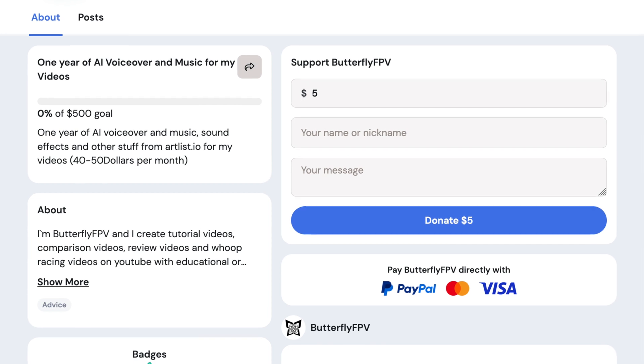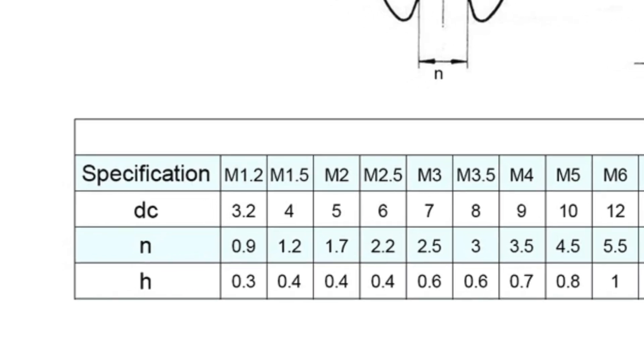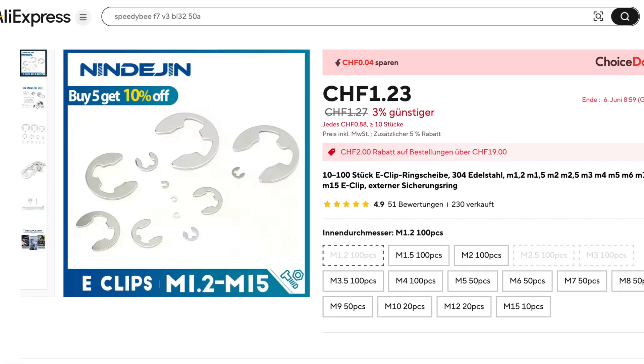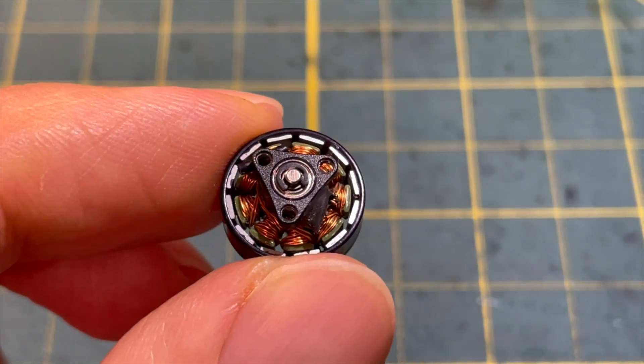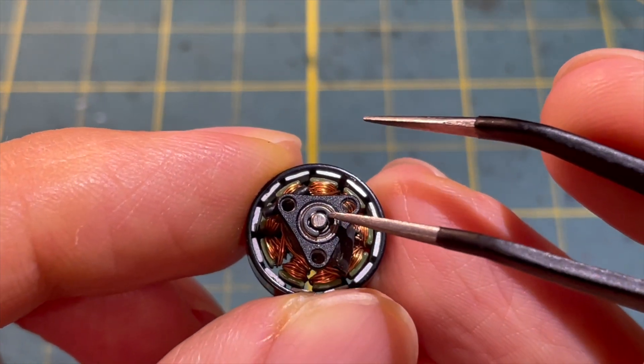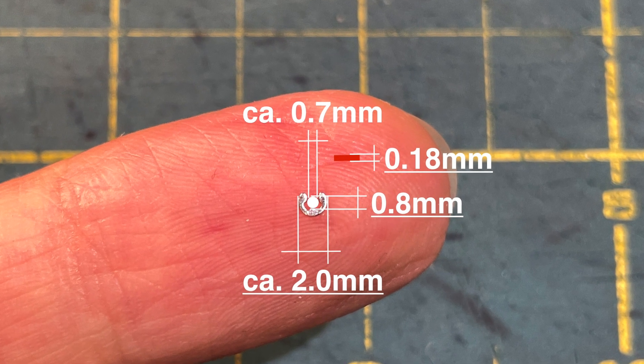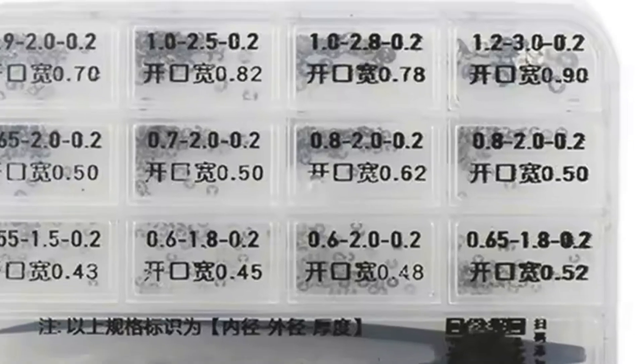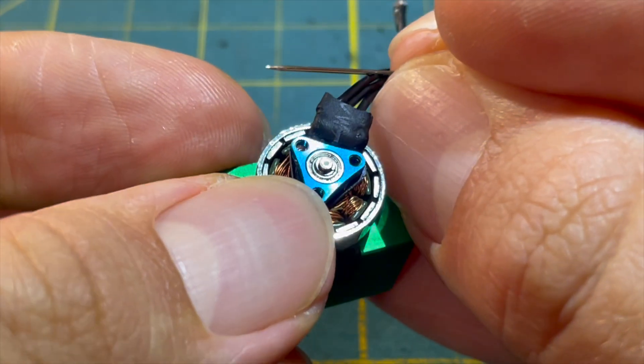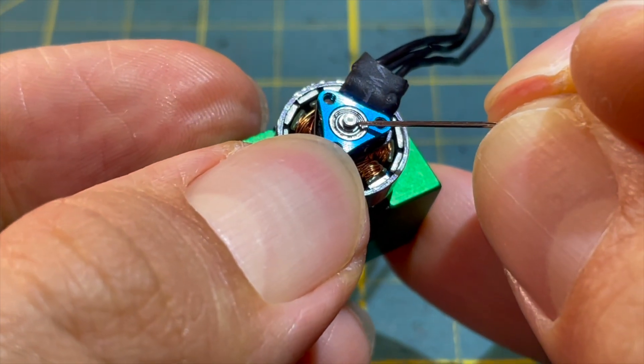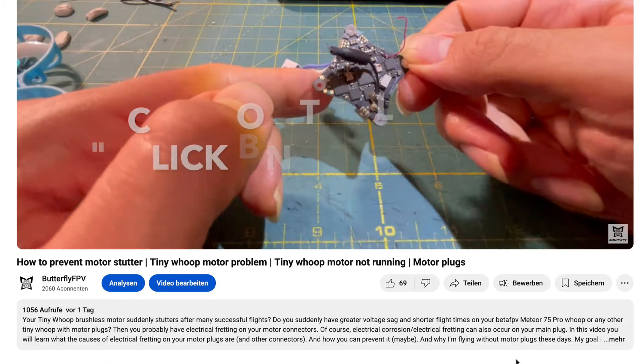Now back to the video. The larger E-clips have an inner diameter of 1.2 millimeters and an outer diameter of 3.2 millimeters. The opening is 0.9 millimeters and the thickness is 0.3 millimeters. The smaller E-clips have an inner diameter of 0.8 millimeters and an outer diameter of 2.0 millimeters. The opening is 0.62 millimeters and the thickness is 0.2 millimeters. You can find the links to the AliExpress sellers in the video description of this video.